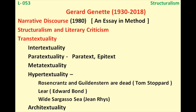The last type is architextuality. It refers to texts having a relationship based on their genre — when two different works share the same genre or belong to the same category. For example, both being Gothic novels, both being romantic comedies, or both being tragedies. That is architextuality.